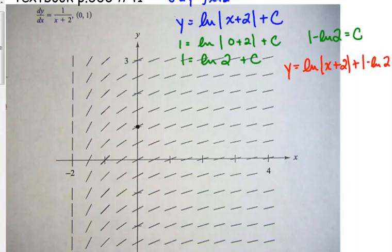Technically, we could use some properties of logarithms if we wanted to simplify things. You could combine those two logarithms since it's minus the natural log of 2. That turns into division in a single logarithm. That is part B. Use integration to find the particular solution of the differential equation.